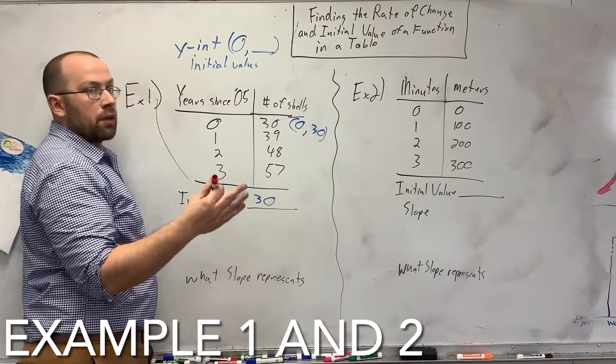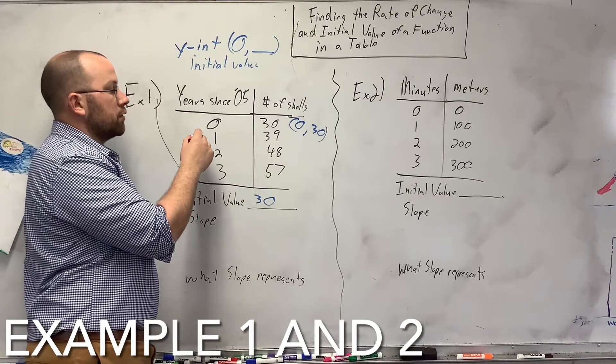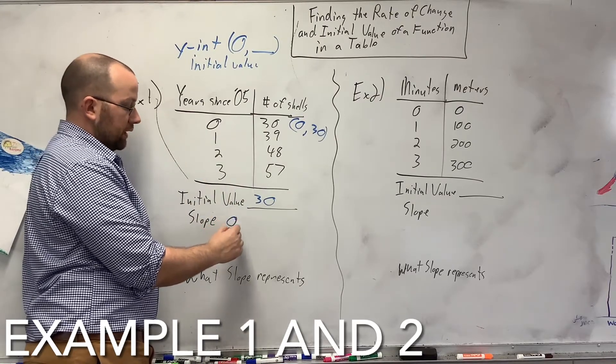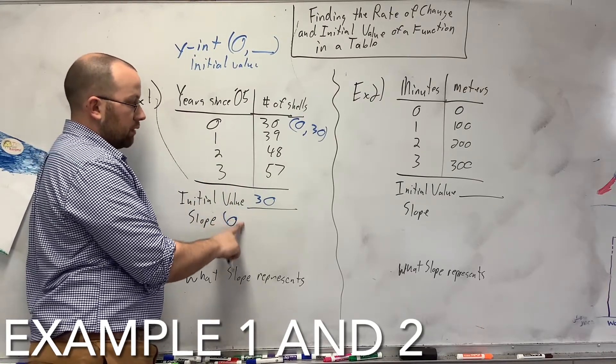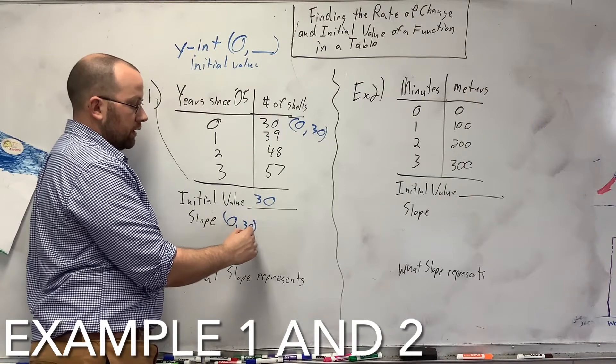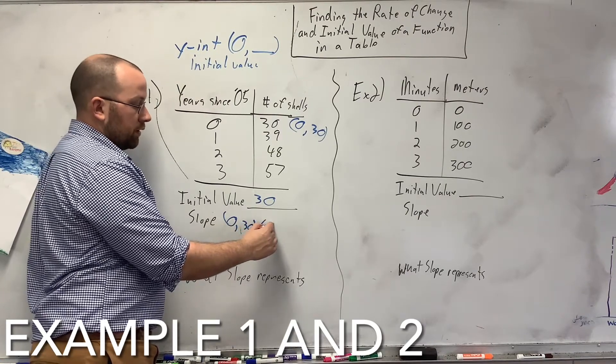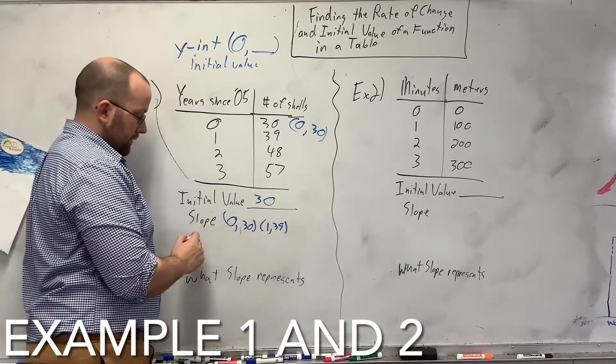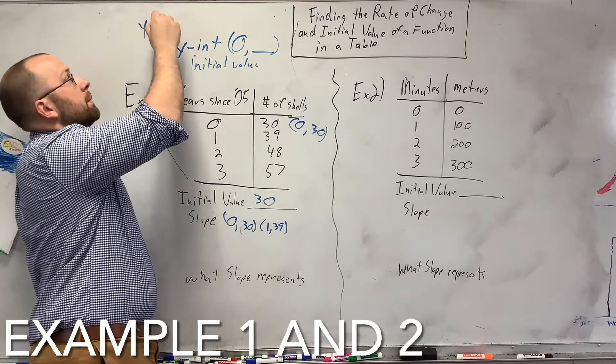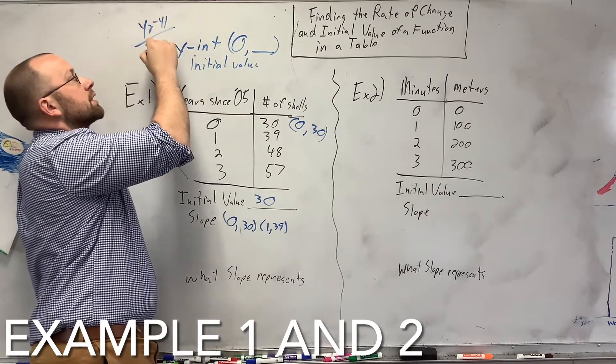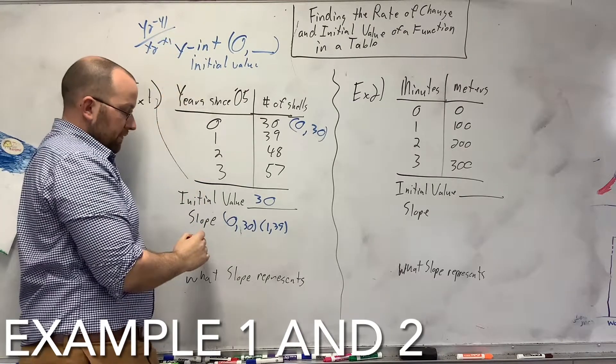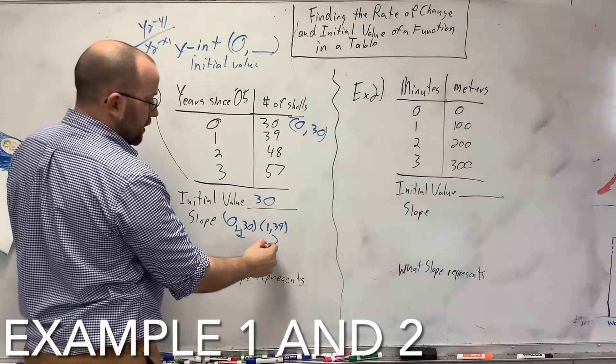Now, your slope. You can't use rise over run here. So, what you have to use is two points. 0, 30, and I'm going to use 1, 39 to find it. So, it's y2 minus y1 over x2 minus x1. So, I call this 1, I call this 2. xy, xy. Then, whatever I numbered it, I make that my subscript.